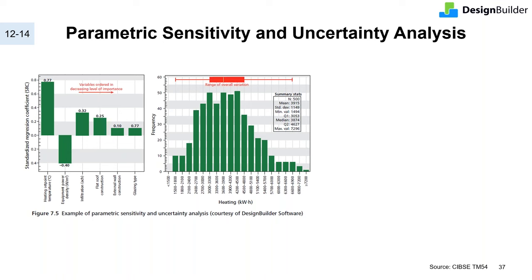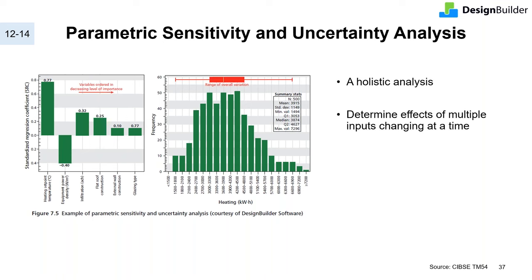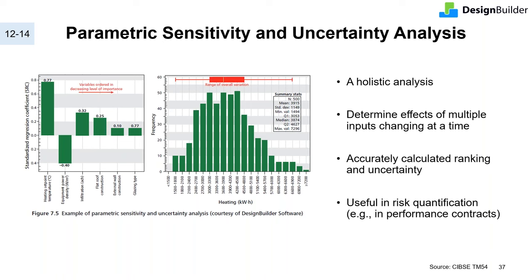A more structured way of assessing sensitivity is to do a multi-parameter analysis. This holistic analysis allows you to determine the combined effect of changing multiple inputs, because the combined effect may not be directly equivalent to the sum of its parts — some variables may cross-compensate each other. DesignBuilder can do these analyses in an automated way, and this module is fully integrated into the modeling interface. You can identify and rank design inputs in terms of importance. This parametric approach is especially useful in quantifying risk in projects procured under performance contracting where more accuracy is needed.